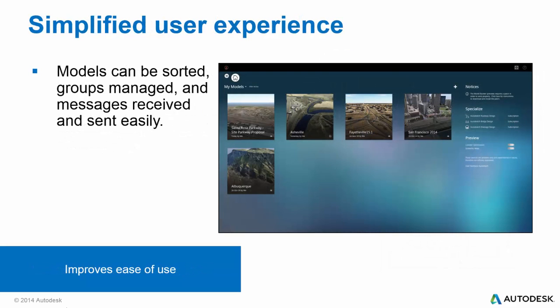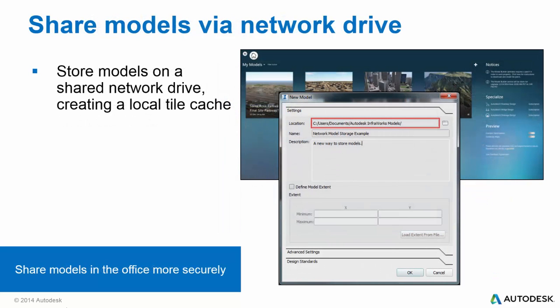Another big step forward is a new homepage redesigned for simplicity and ease of use. Following an update to the look and feel within models, the homepage now has a clean new look. Models can be sorted, groups managed, messages received and sent, and technology previews activated with just a few clicks. Finally, the return of modeled network storage enables you to store models on a shared network drive, creating a local tile cache, allowing you to share InfoWorks 360 models with others in the office while keeping data behind company firewalls.